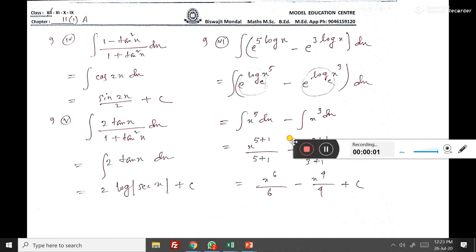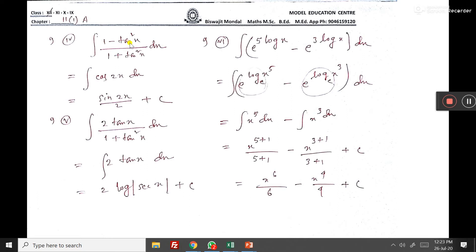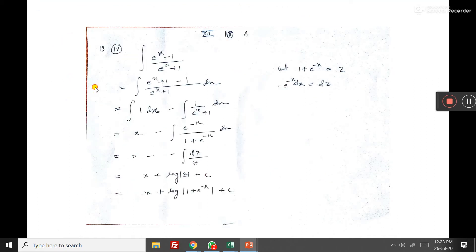You see this sum, it is very easy. It is given (1 - tan²x)/(1 + tan²x). The formula is cos 2x. This is the formula.